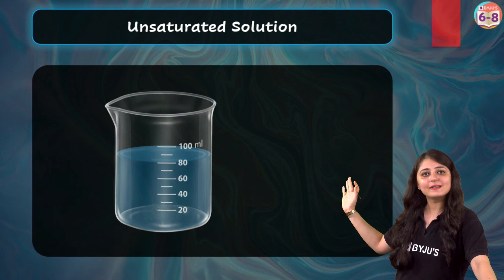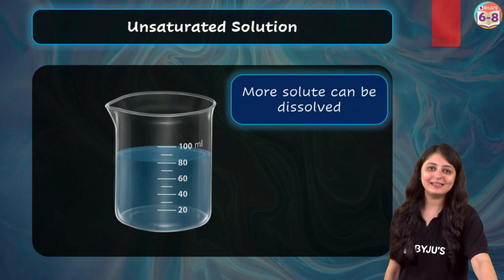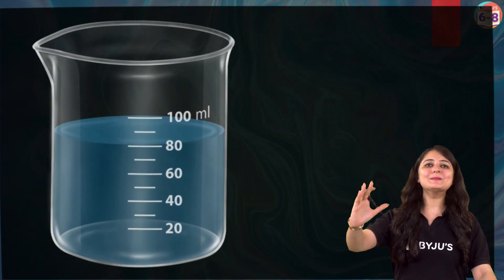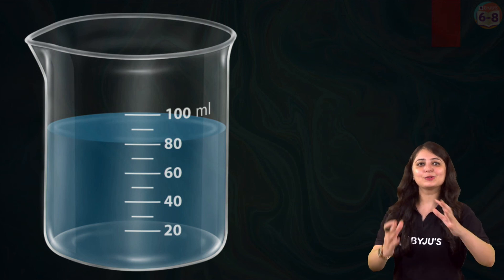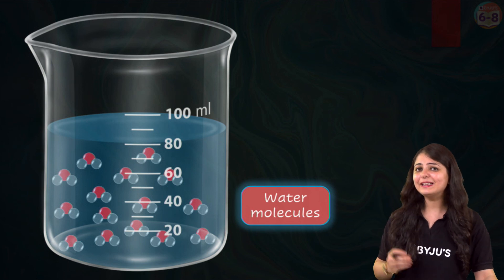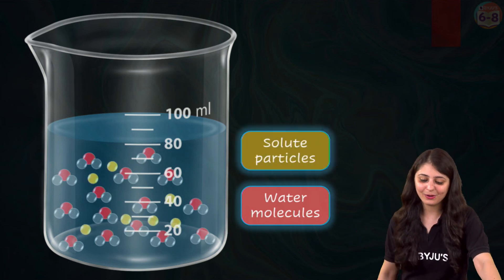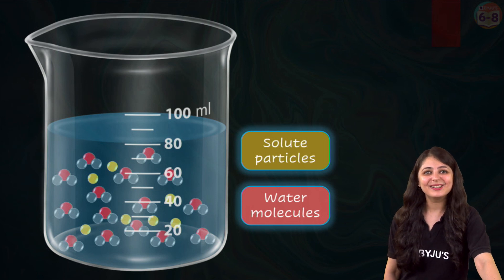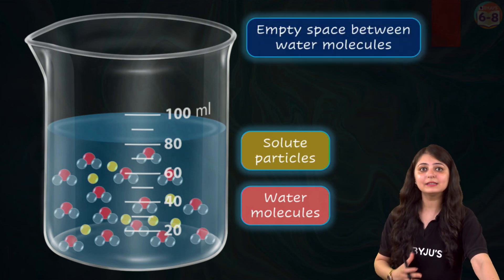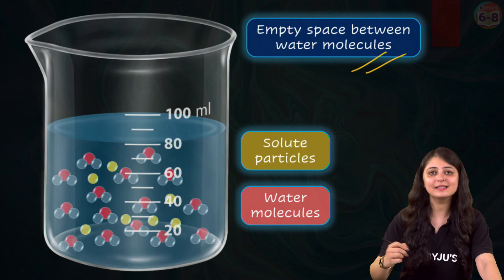Look carefully - sugar dissolves completely. In fact, more sugar can also be added. Let's zoom and observe. We have water molecules and in between the water molecules our solute particles are dissolving. Even after adding a spoon of sugar, there is still space for more sugar to dissolve in this.